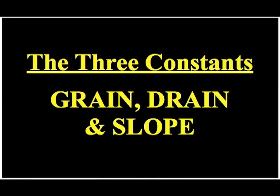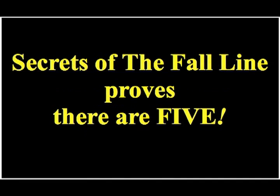Now remember, we're talking about the laws of golf, and within that are the three constants: grain, drainage, and slope. However, Secrets of the Fall Line will prove to you there are actually five, and the other two are just as obvious as grain, drainage, and slope.